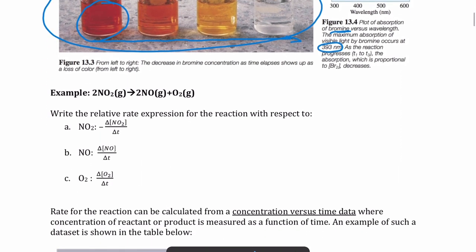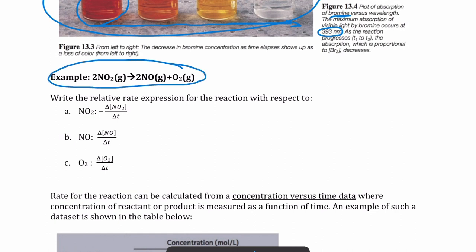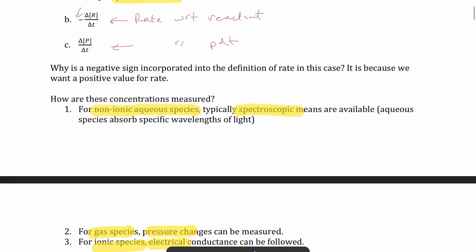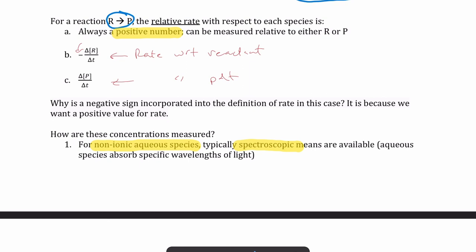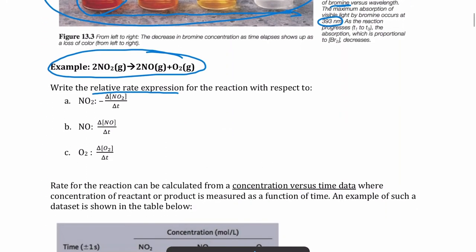Here's a quick example of writing rate expressions. For the reaction 2NO2 → 2NO + O2, we write the rate expression for each species. For the reactant NO2, we write negative delta[NO2] over delta T. For the product NO, we write delta[NO] over delta T. And for O2, it's delta[O2] over delta T.